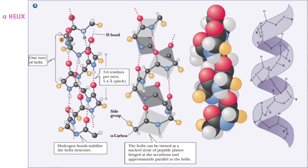Coming back to the alpha helical structure: alpha helix is something like a coiled spring. Along the backbone you can see alpha carbon, nitrogen, carbonyl carbon, alpha carbon, nitrogen, carbonyl carbon — the whole backbone structure. The backbone structure is just coiling like a spring.